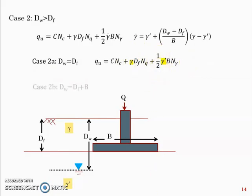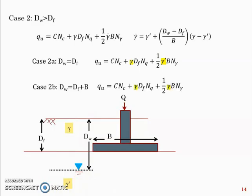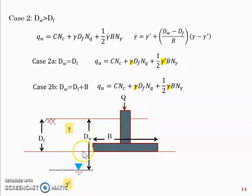Case 2b is when the water table moves further down to a depth of df + B from the ground level — that is, one foundation breadth below the foundation level. In that case the equation is: c·Nc + gamma·df·Nq + half·gamma·B·N_gamma. When the water table is at depth df + B or deeper, there is no effect of water on bearing capacity — just use gamma. If the water table is somewhere between df and df + B, gamma_bar applies. That is the summary of the effect of water table on bearing capacity.